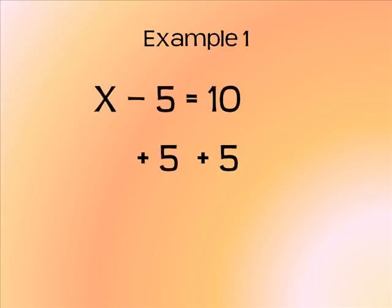Much like we did in previous lessons, we want the x to be by itself. In order to get rid of negative 5, I'm going to use the opposite, positive 5.